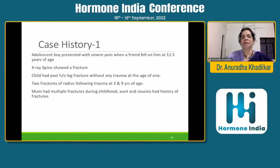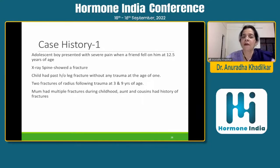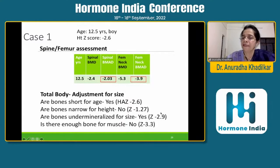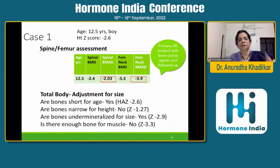Case 1: An adolescent boy, 12.5 years old, presented with severe pain when a friend fell on him. X-ray spine showed a fracture. He had a past history of leg fracture without trauma at age one, two fractures of the radius at ages three and nine, and a family history of multiple fractures in his mother, aunt, and cousin. On DEXA, his height Z-score was minus 2.6. Adjusted spinal bone density was minus 2.03 — low. Femoral density was minus 3.9 — quite low. Bones were short for age, undermineralized, and there was insufficient bone for muscle at minus 3.3. This child was diagnosed with osteogenesis imperfecta and treated with bone active agents.